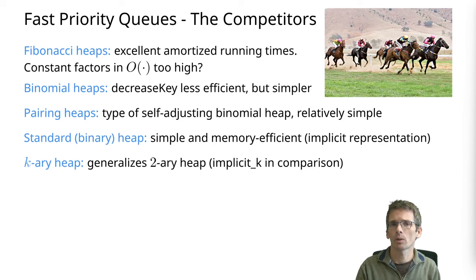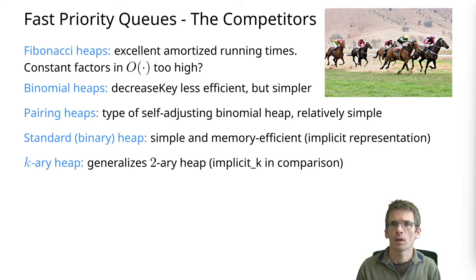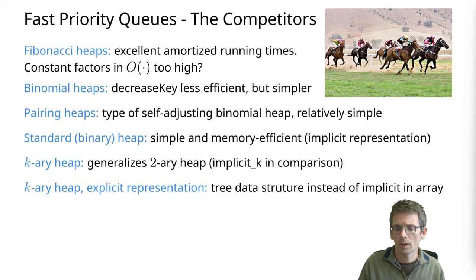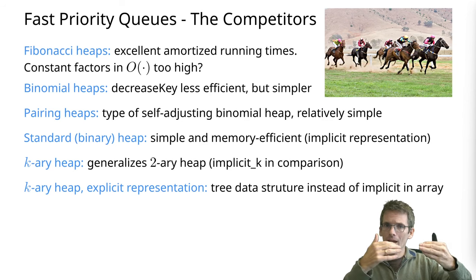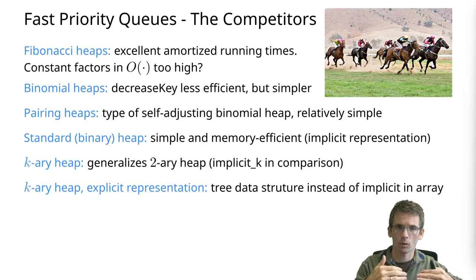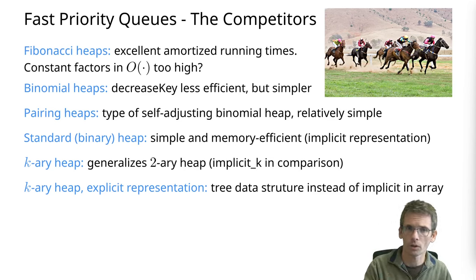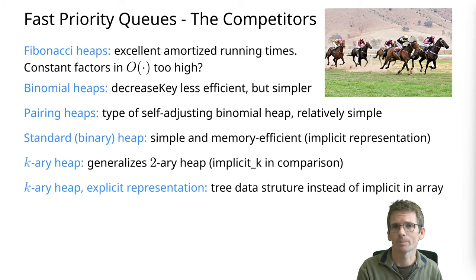In the comparison, this will be called the implicit K representation, in contrast to explicitly representing the heap as a tree data structure. We could also store a standard heap as a tree, but we don't — we use an array, and you'd expect that to be more efficient.